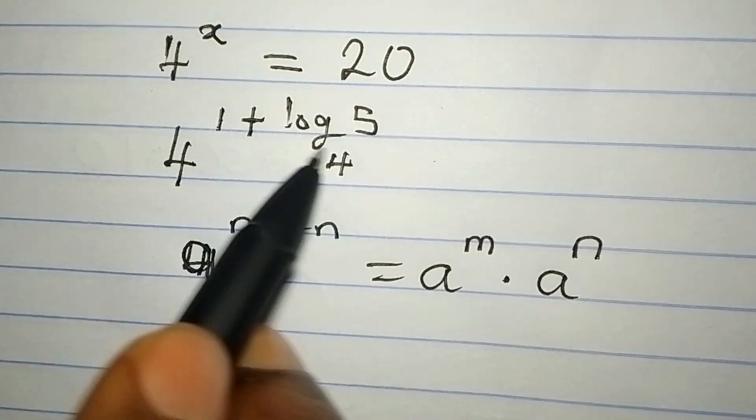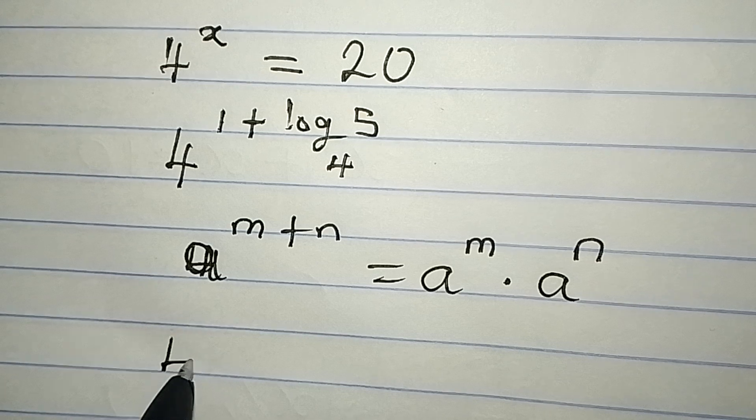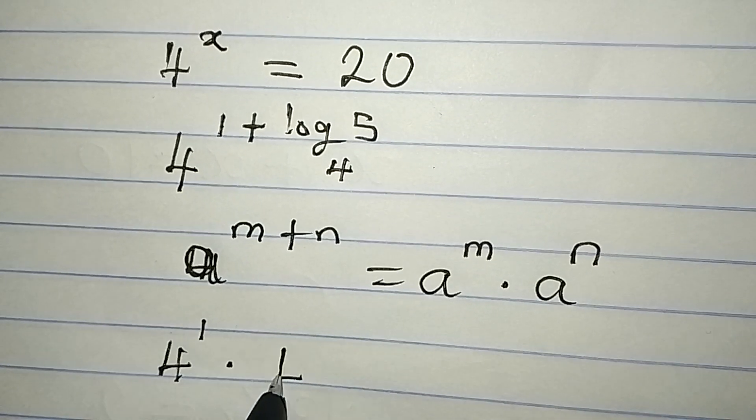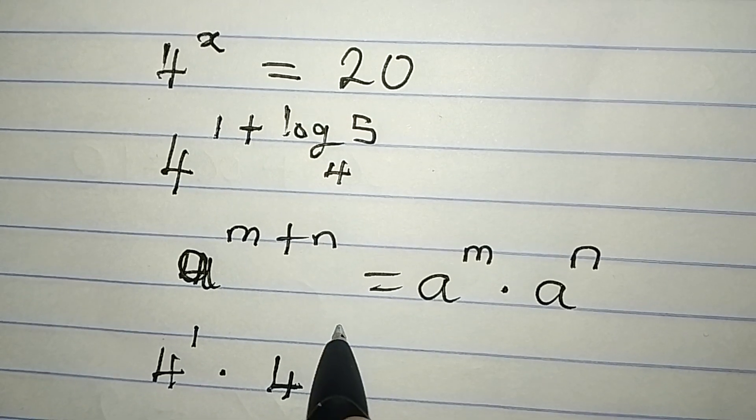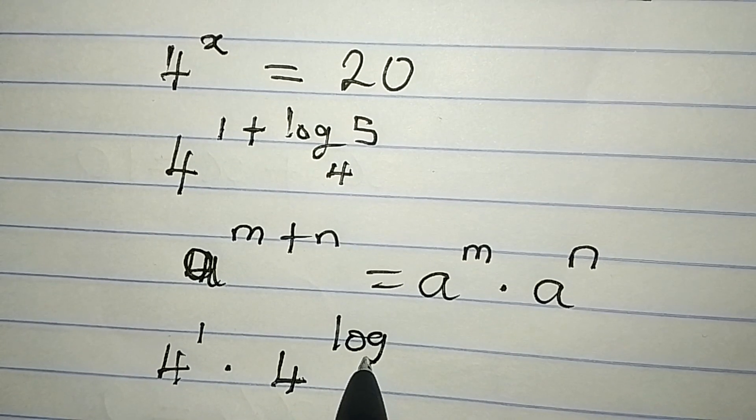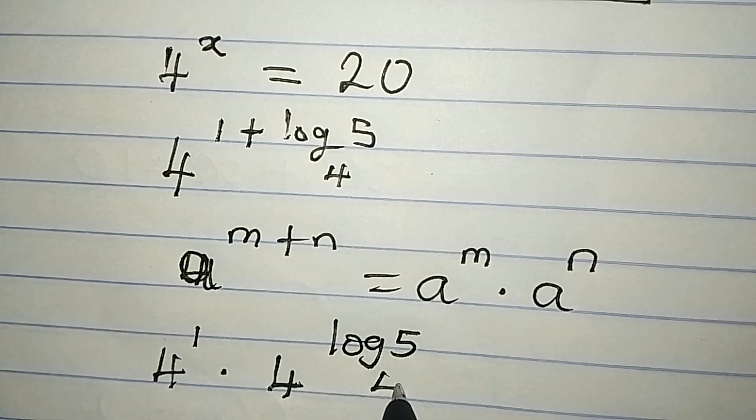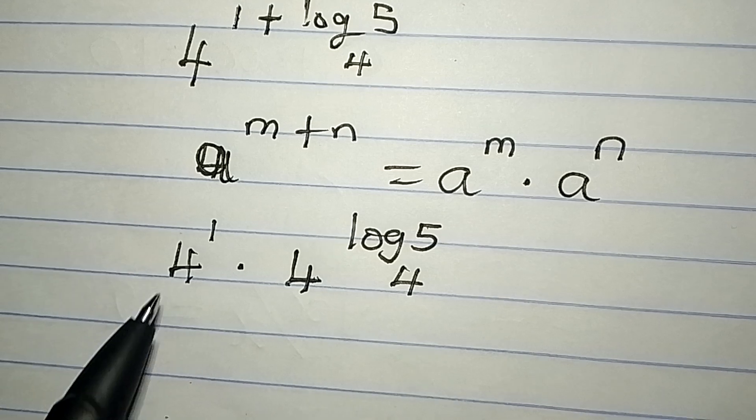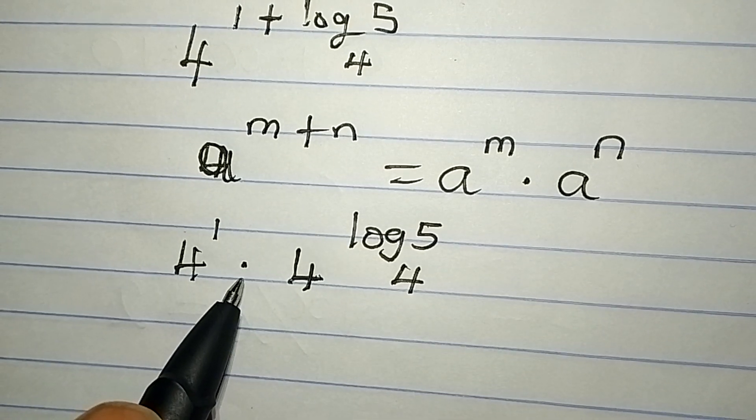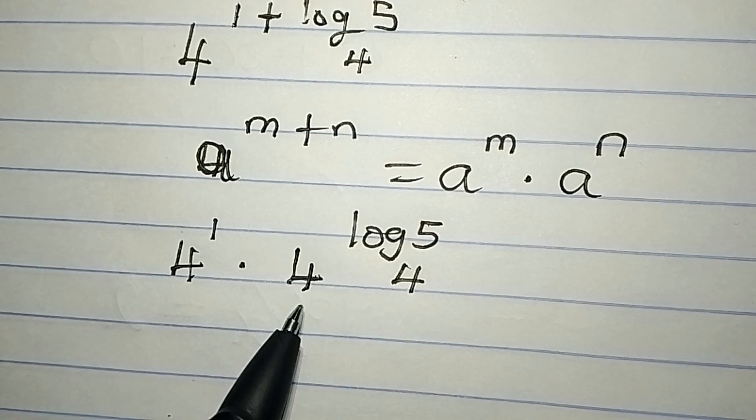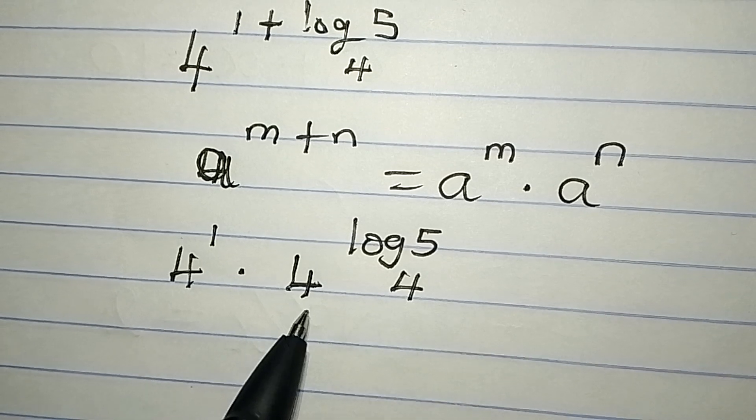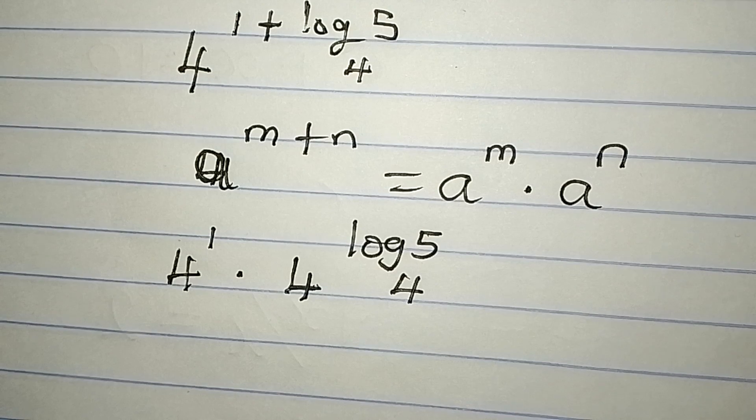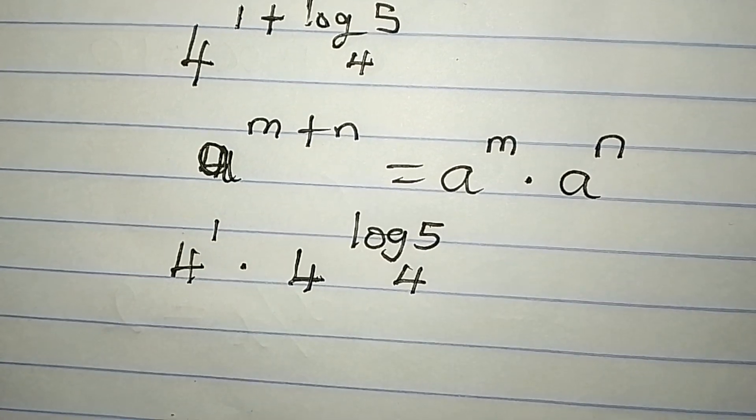To do the same thing to this, we're going to have 4 to the power of 1 multiply by 4 to the power of log 5 to base 4. Now, how do we deal with this?